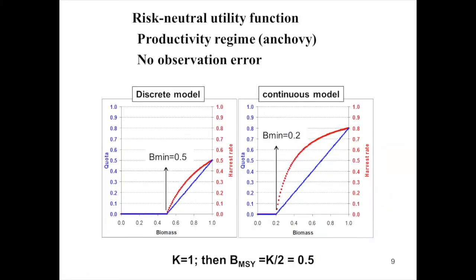Here I show basic results comparing the fixed scaling rule for the continuous and discrete models without observation error. I found that the optimal harvest control rule — Bmin and Qslop — depended on the population dynamic model. For example, under a regime shift in productivity with constant carrying capacity, Bmin was 0.5 for the discrete model and 0.2 for the continuous model, and both had Qslop equal to 1, without observation error. When I include observation error, I obtain different Bmin and Qslop between the continuous and discrete models.